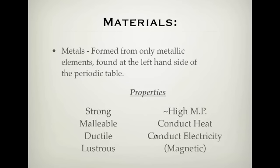Metals also have the ability to conduct heat — if you put a metal in a fire, it will start to get hot on the other end, so heat travels well through it. Metals also conduct electricity, which is why you can get electrocuted and be seriously injured — please do not do that. Some metals are also magnetic, but that's in brackets because we don't really deal with that at this level. But these are the properties of metals that we can explain.